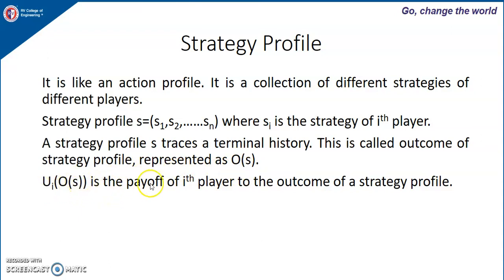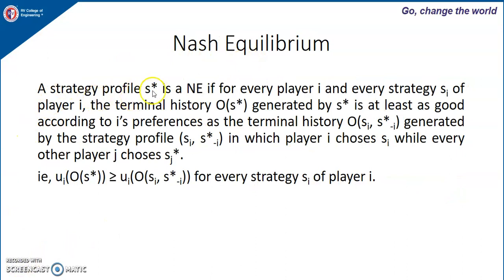u_i(O(s)) is the payoff of the i-th player to the outcome of a strategy profile. A strategy profile s* is a Nash equilibrium if for every player i and every strategy s_i of player i, the terminal history O(s*) generated by s* is at least as good according to player i's preferences as the terminal history O(s_i, s*_{-i}), in which player i chooses s_i while every other player chooses s_j*. That is, u_i(O(s*)) ≥ u_i(O(s_i, s*_{-i})). If player i shifts from the Nash equilibrium strategy to any other strategy, his payoff will definitely reduce.